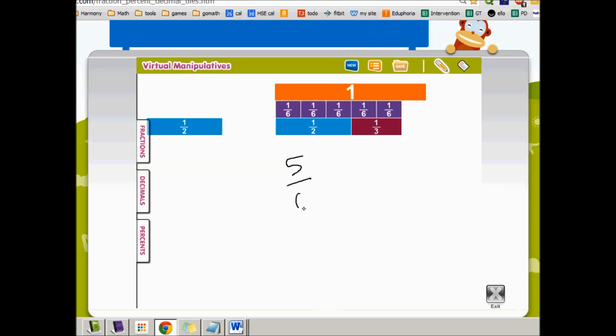So my problem is 5 sixths, which is here, minus 1 half, which is here. My answer is this block here, which is 1 third.